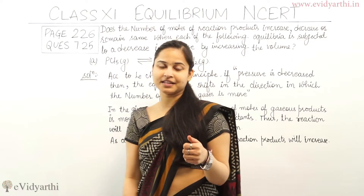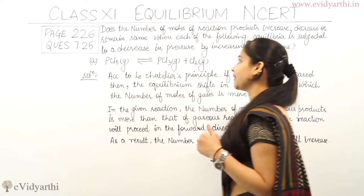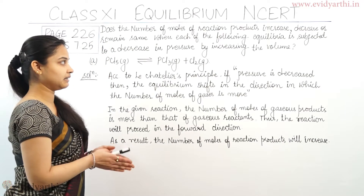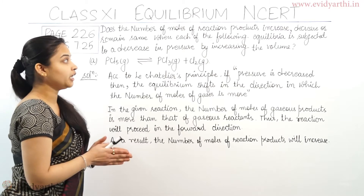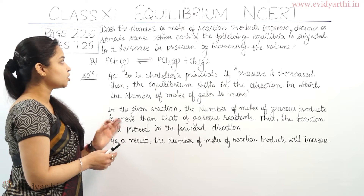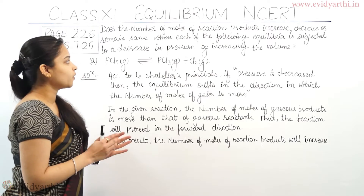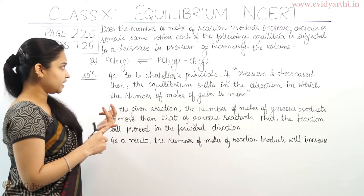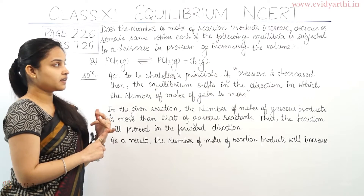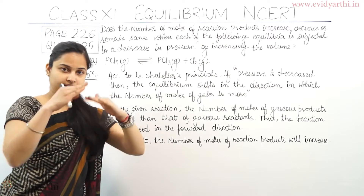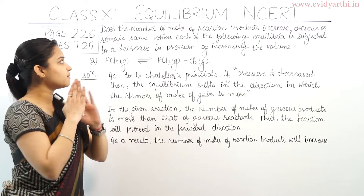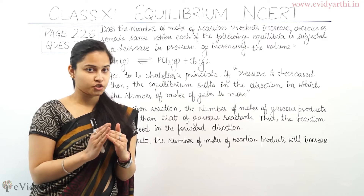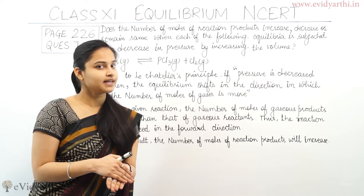So let's see what the question is about and then follow the solution. The question asks: does the number of moles of reaction product increase, decrease, or remain the same when each of the following equilibria is subjected to a decrease in pressure by increasing the volume?